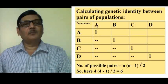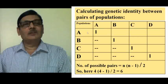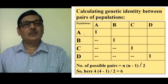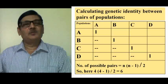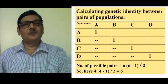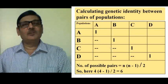Suppose there are four populations: A, B, C, and T. When we test genetic identity, it will definitely come to 1 between individuals of the same population, such as A and A or B and B, showing complete similarity. But between A and B, or A and C, there will be some intermediate value for genetic identity. By going through such values, we can know which two populations are very similar and which are distantly related or genetically very different.